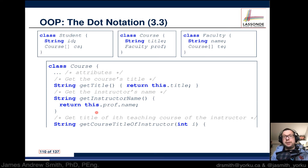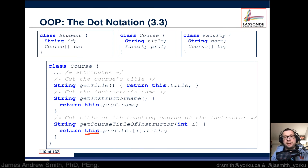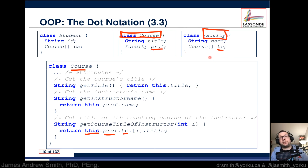We can also get the title of a particular course that the instructor teaches — the instructor's course title. We have an input parameter i. We reference this course, ask for the professor, then te — which is defined in the Faculty class — indexed by i to get the specific course.